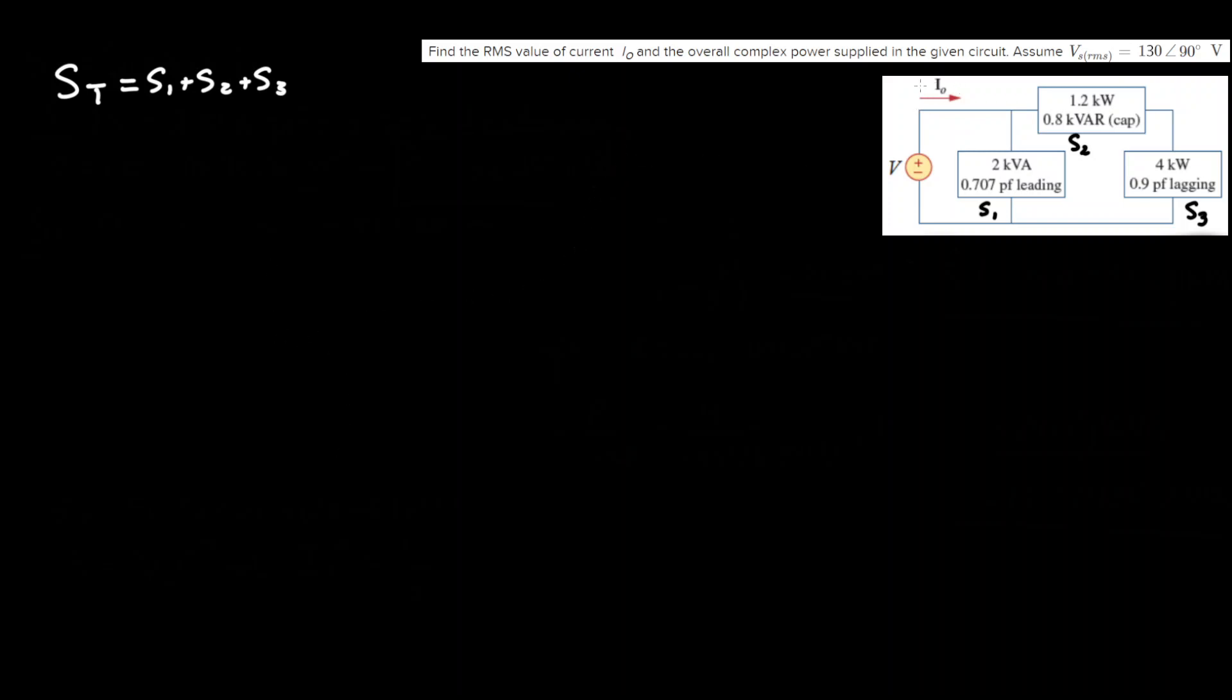So to find I0 what we have to do is first find S total and using the formula S equals V times I complex conjugate, we'd be able to find I0 pretty quickly.